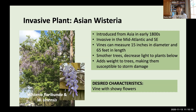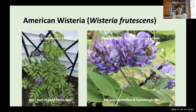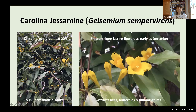For a vine with showy flowers, I suggest American Wisteria and Carolina Jessamine. American Wisteria is a climbing deciduous vine reaching 15 to 30 feet in sun to part shade and moist to wet conditions, with beautiful flowers from April to August beginning when plants are fairly young — attracting butterflies and hummingbirds. Carolina Jessamine is a climbing evergreen vine reaching 10 to 20 feet in sun to part shade. It develops fragrant, long-lasting flowers starting as early as December in warm winters, attracting bees, butterflies, and hummingbirds.